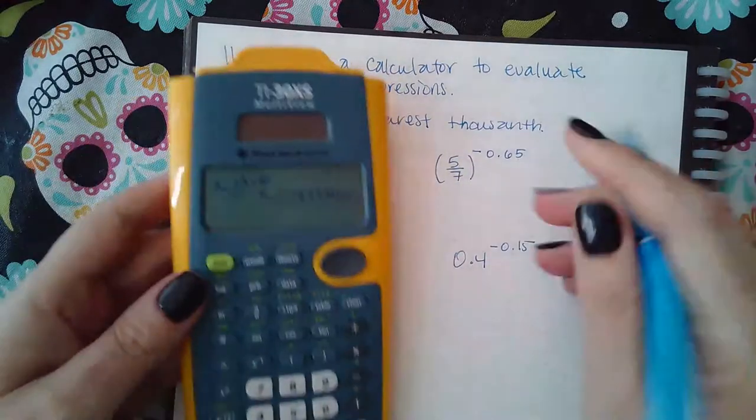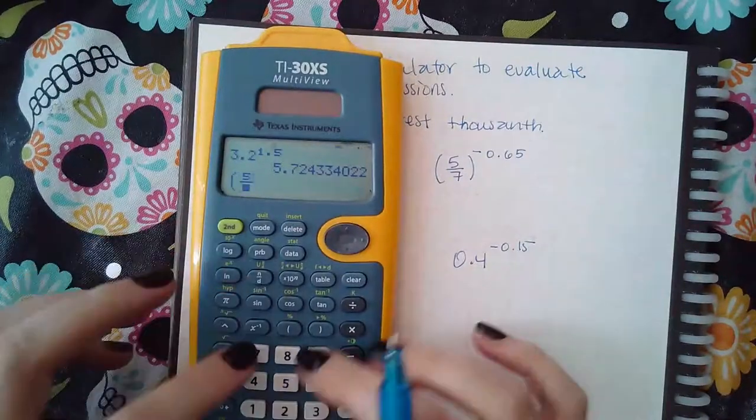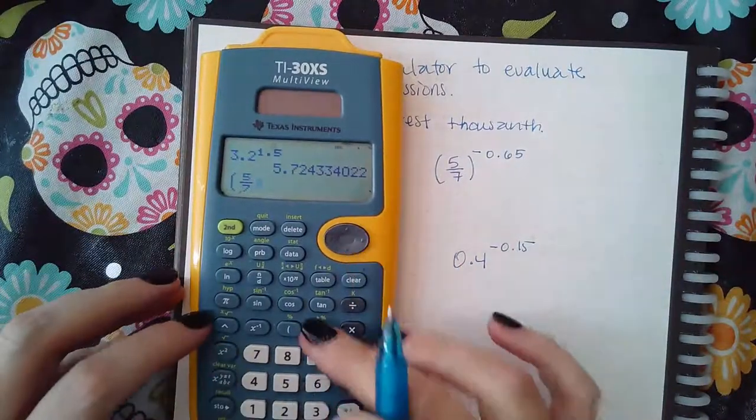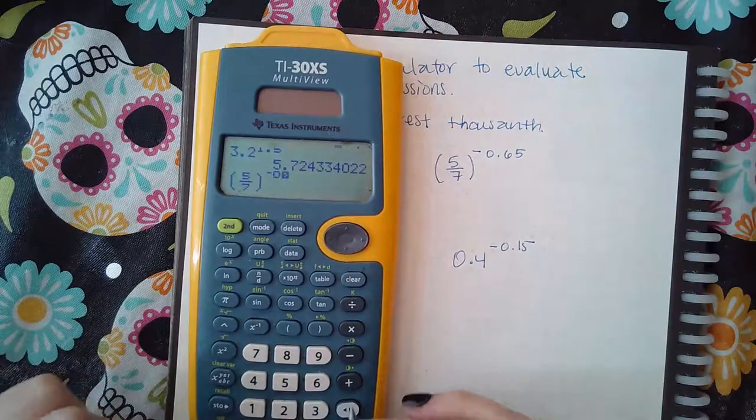And then the other one: parentheses, 5 over 7, close it, raised to the negative 0.65.